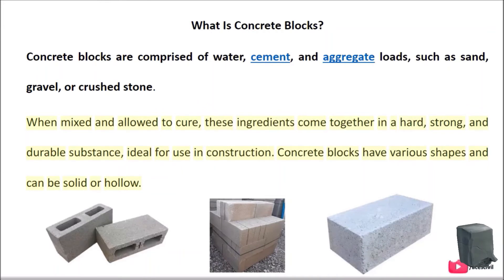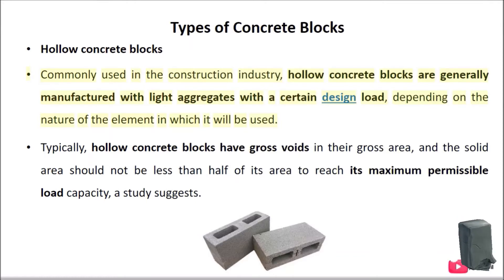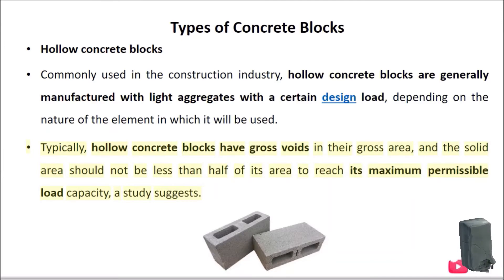Concrete blocks have various shapes and can be solid or hollow. Commonly used in the construction industry, hollow concrete blocks are generally manufactured with light aggregates with a certain design load, depending on the nature of the element in which they will be used. Typically, hollow concrete blocks have gross voids in their gross area, and the solid area should not be less than half of its area to reach its maximum permissible load capacity.